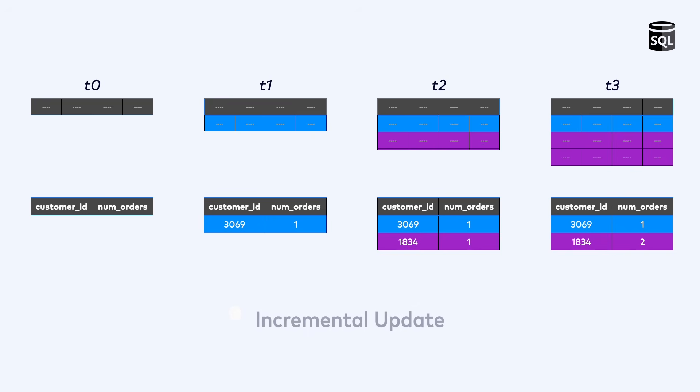More interesting though is the incremental update strategy, where the cached results are automatically kept in sync with the underlying tables, and this is done incrementally, thus requiring less total effort than a complete refresh. When the materialized view is first created, the view is bootstrapped with a complete refresh, just as before. But then after each subsequent update to the underlying table, that change to the base table is combined with the previous version of the materialized view to produce an updated view. In our example that is counting orders for each customer, each time an order is added to the orders table, the counter for that specific customer is incremented in the materialized view. If the orders table is large, this incremental update strategy will be dramatically more efficient than scanning the table each time.